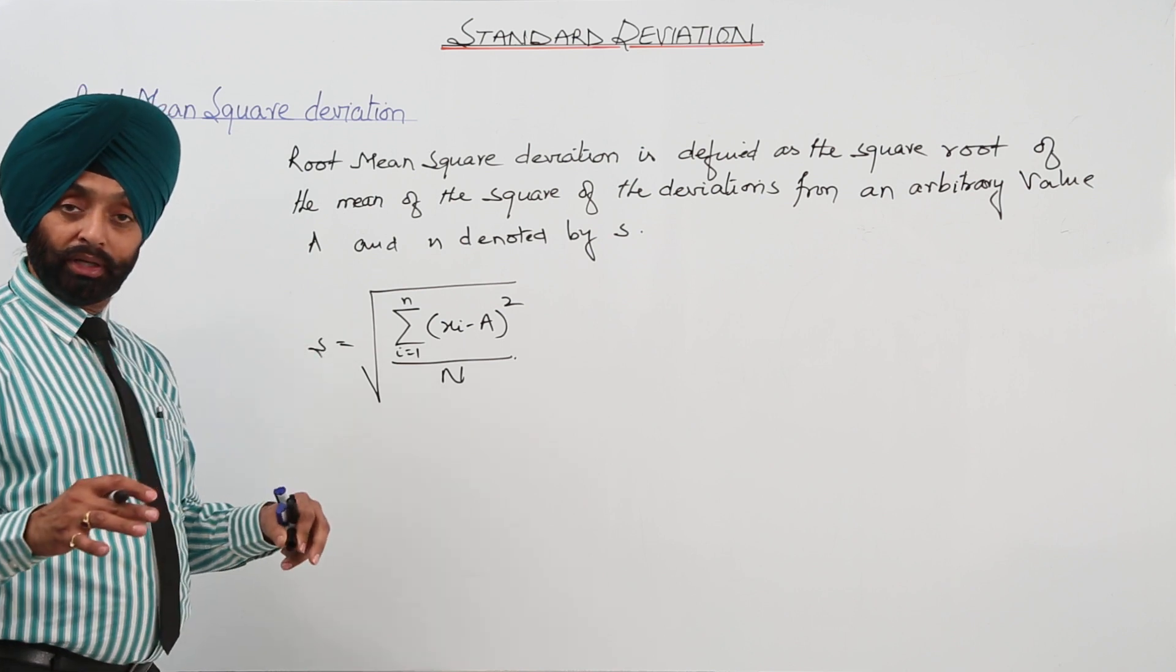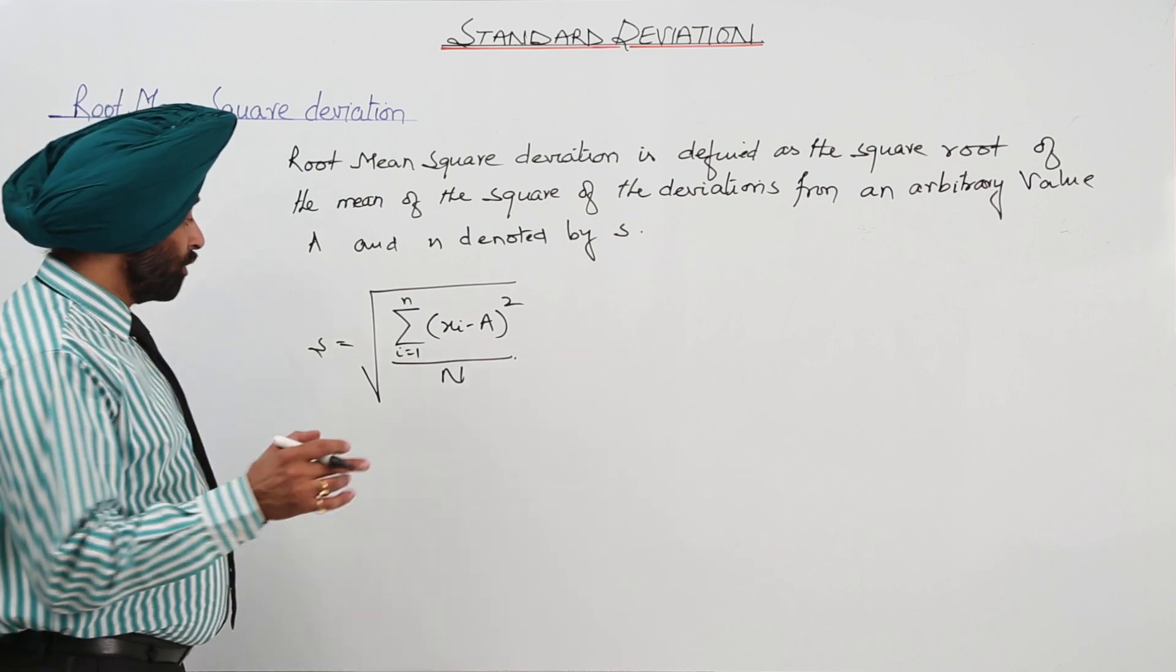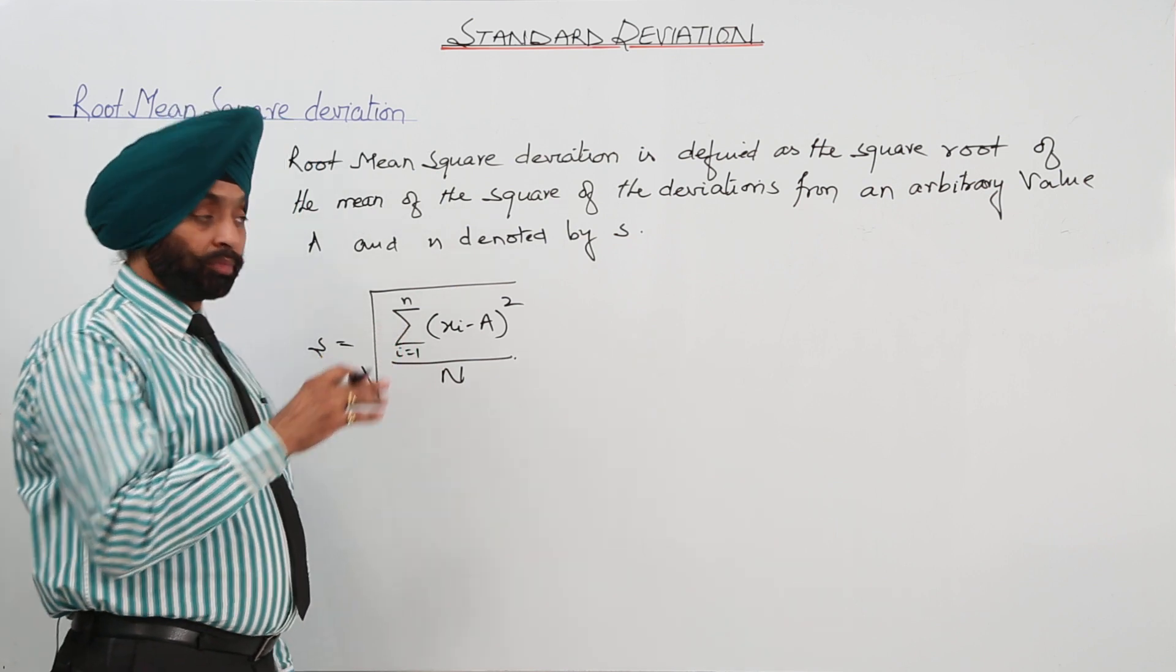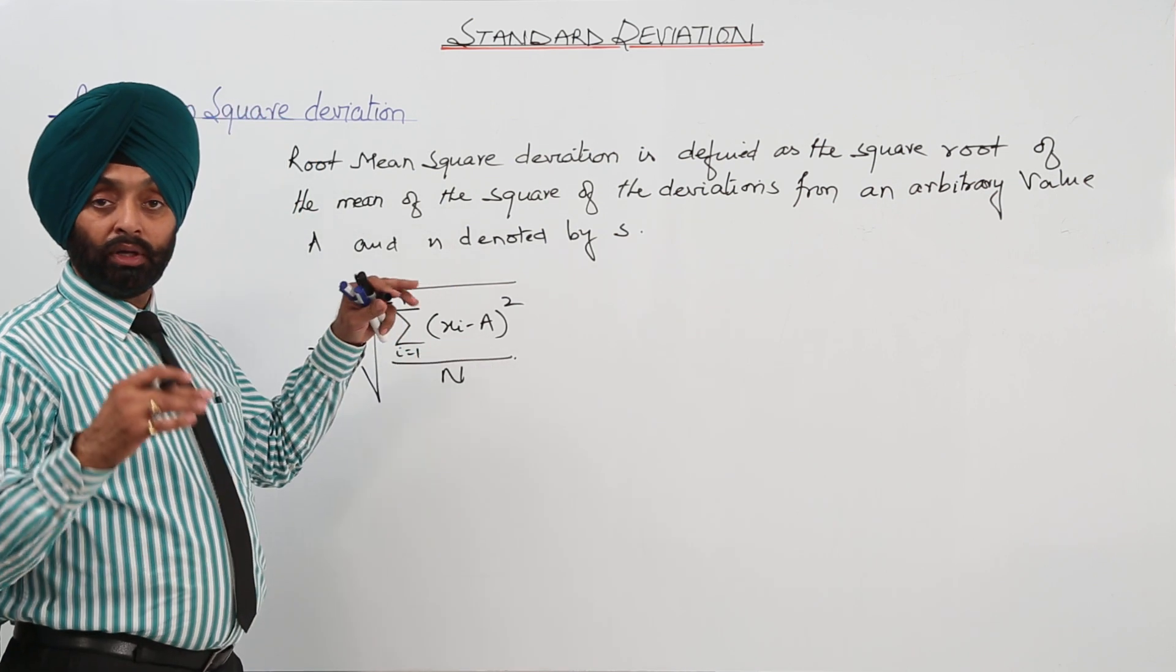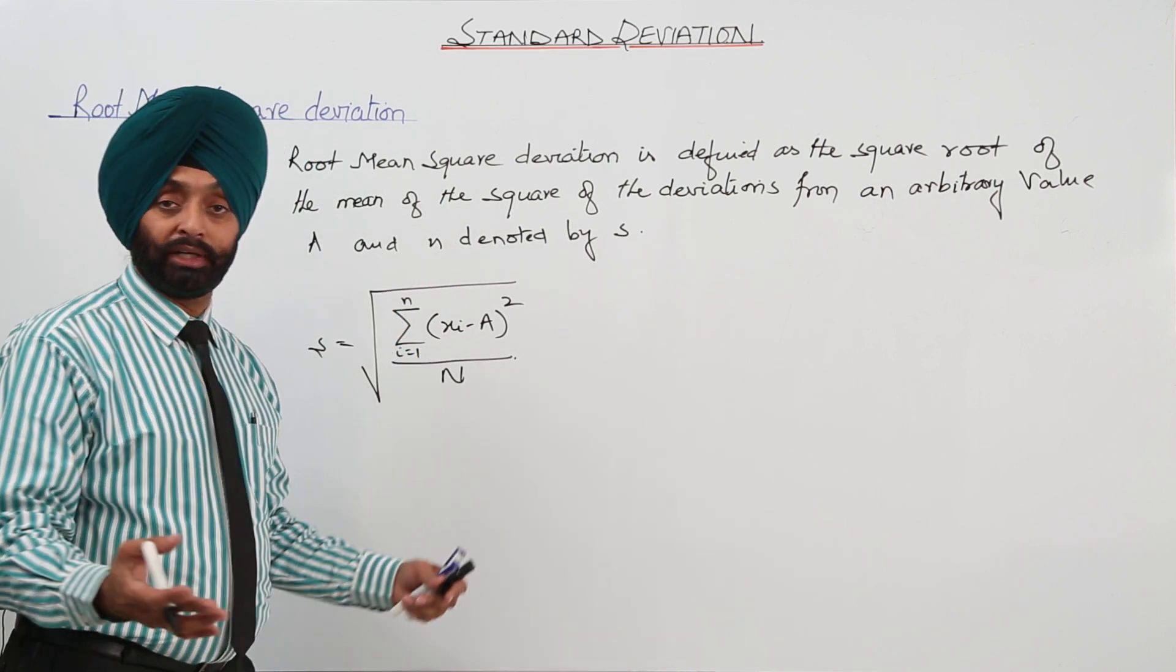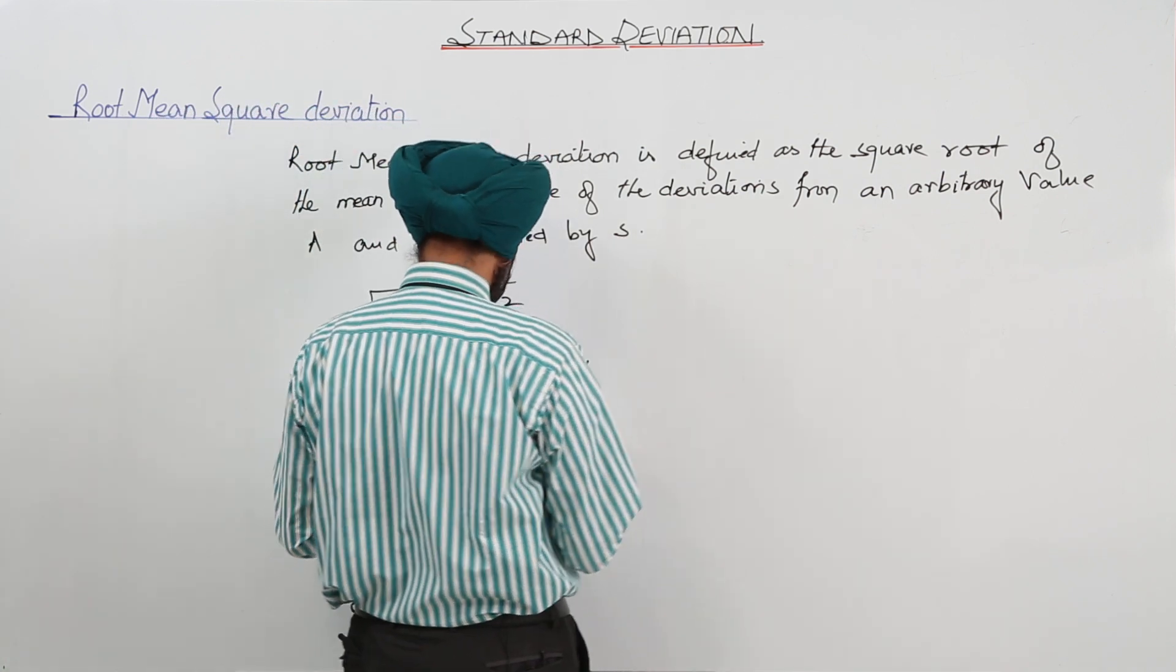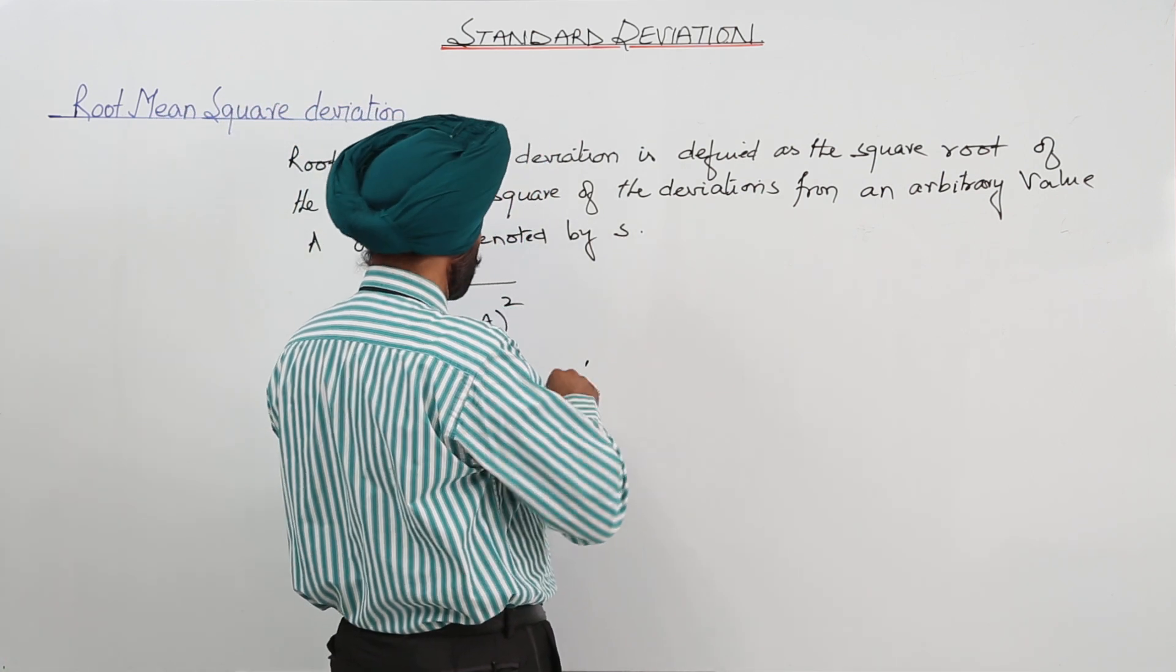Now, I will be giving you again a definition. In place of this capital A, this arbitrary number, if we are writing mean, it becomes a standard deviation. So that's why we have written this one first.